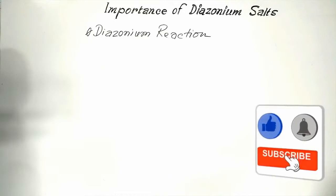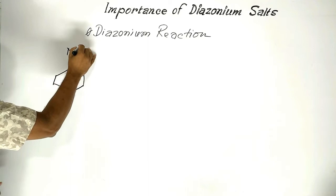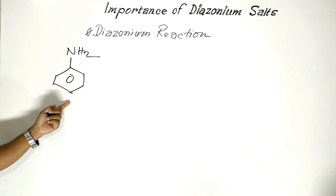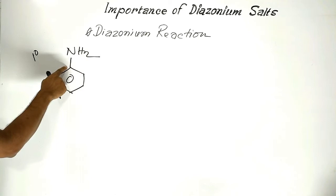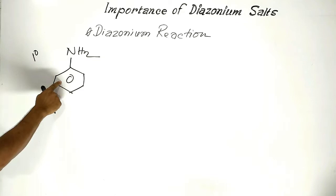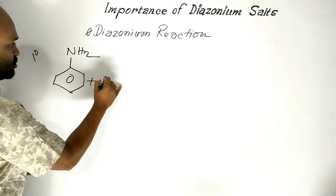First point is the diazonium reaction. This is aniline, or aminobenzene. This is a kind of primary aromatic amine, or one-degree aromatic amine. It is one degree because the nitrogen of the amino group is linked up with only one carbon atom. That is why this is a one-degree aromatic amine.